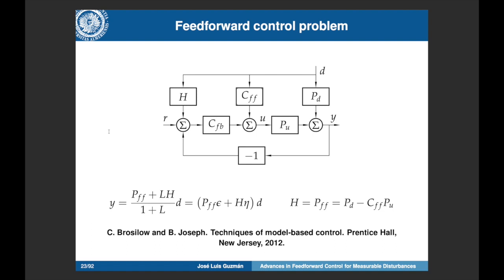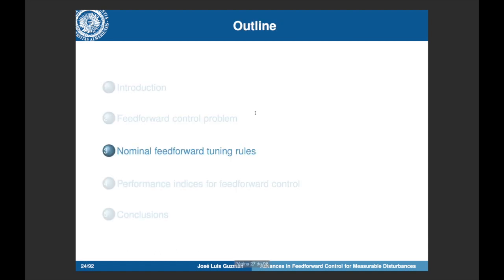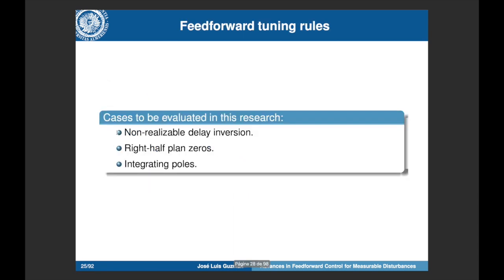This issue was first observed by Brosidoff and Joseph in their textbook. They proposed feeding the residual term back with a reverse sign into the loop, so the interaction between the feedback and feedforward compensator is removed, allowing each to be designed independently in open loop. In the following sections I will present tuning rules for these two control schemes: the classical feedforward scheme and the non-interacting scheme proposed by Brosidoff and Joseph. We focus here on the time delay inversion problem.